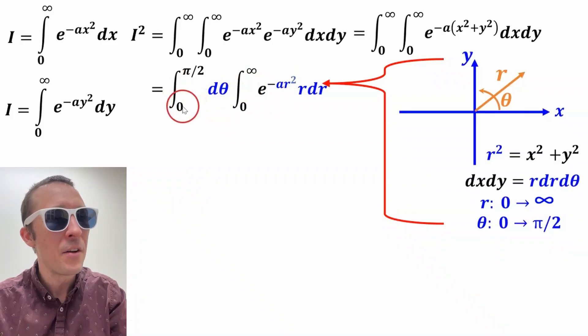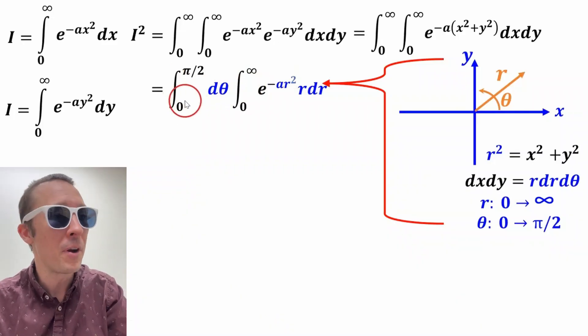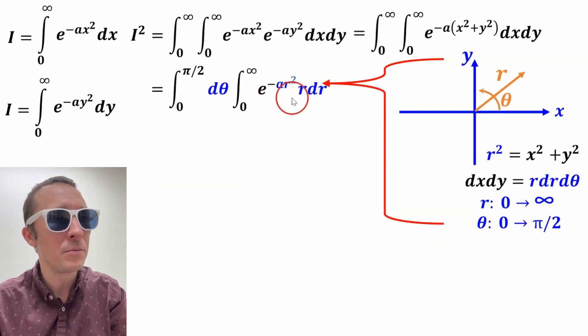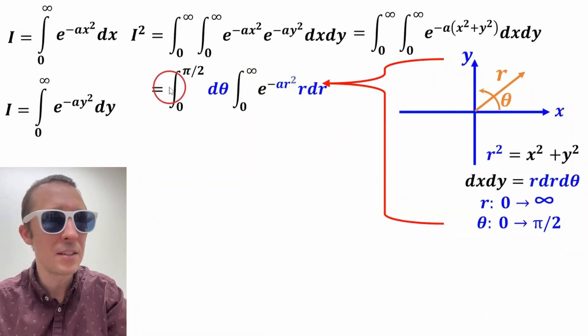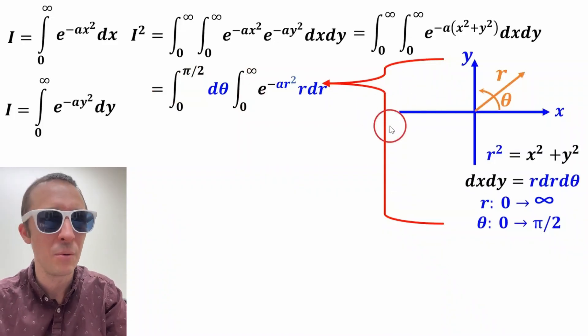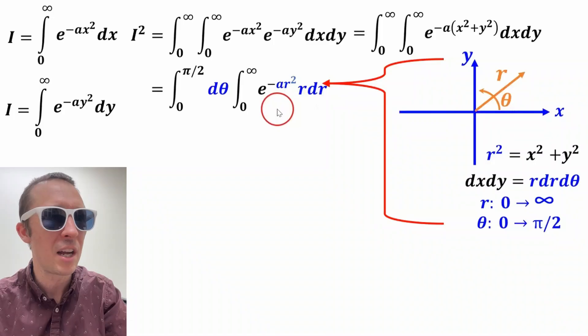So we're integrating d theta from zero to pi over two. And we're integrating e to the negative a r squared from zero to infinity. r dr is right here. Okay, if you need to know this in detail, I have a detailed video on this, but I just didn't want to explain this too much, just kind of keep it short.